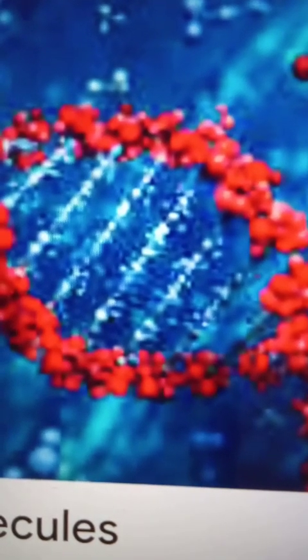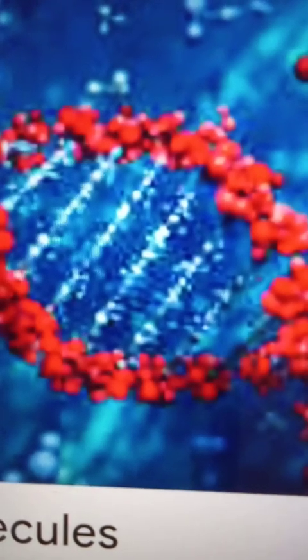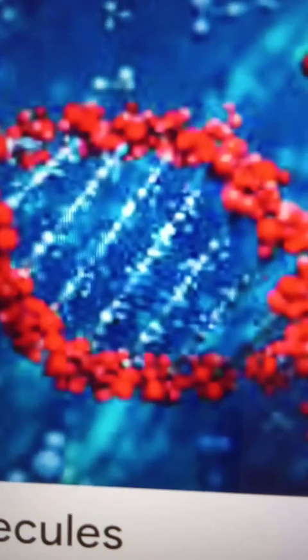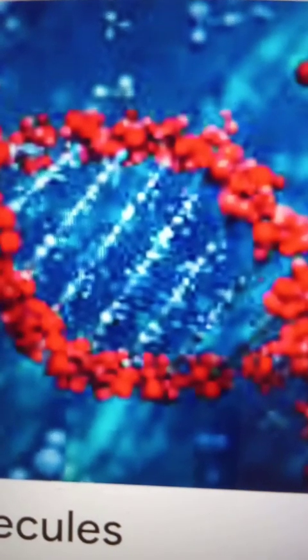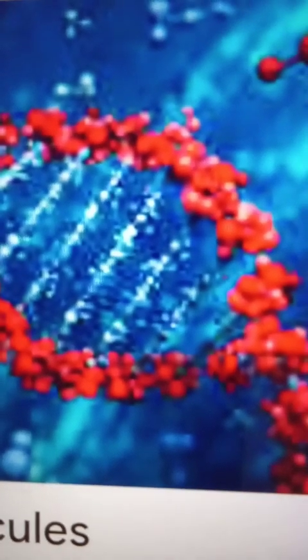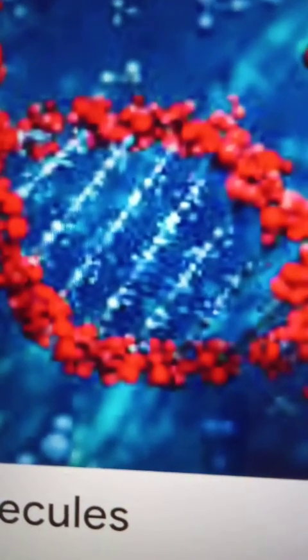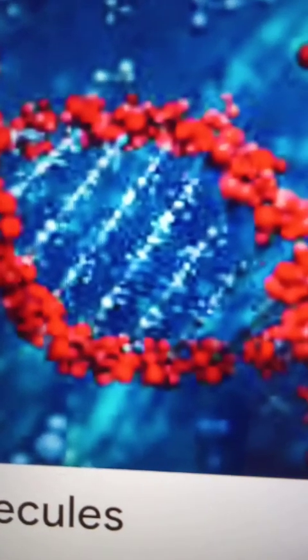What is the name of the carrot? Carotenoids. Anthocyanins. Carotenoids — all the carrots are Carotenoids.